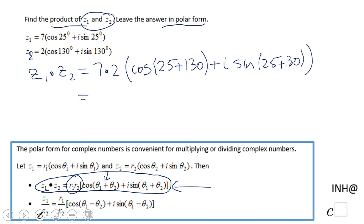So we have 7 times 2 equals 14, cosine of 155 minus i sine of 155, and this is the polar form.